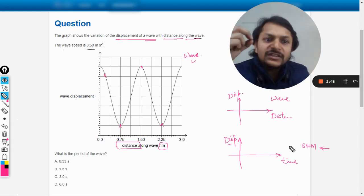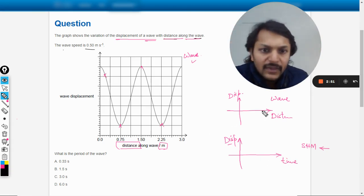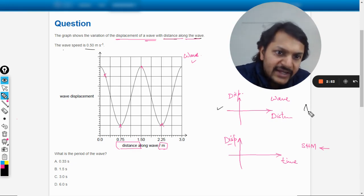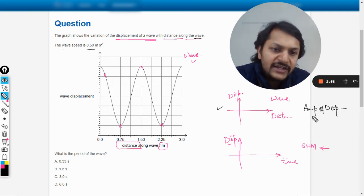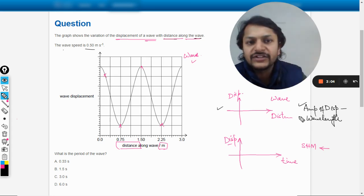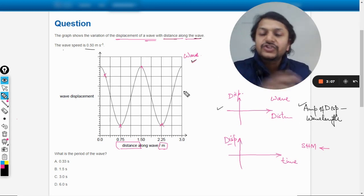So what are the things that you can find from these two graphs? In this graph, when you talk about wave, you can find the amplitude of displacement and you can find the wavelength. These are the two things you can find if this kind of a graph is given. Now this graph is already given here, so you can find the amplitude as well as the wavelength.